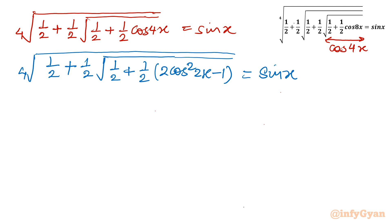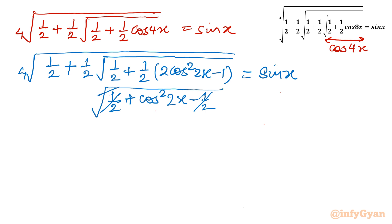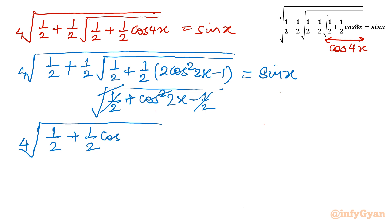Expanding this: half plus half times (2 cos² 2x minus 1) gives half plus cos² 2x minus half. The two half terms cancel, so square root of cos² 2x equals cos 2x. The expression now becomes 4th root of half plus half cos 2x equal to sin x.